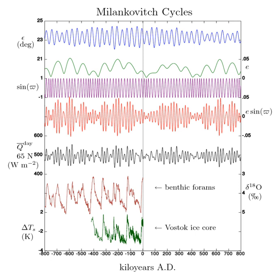Milankovitch emphasized the changes experienced at 65 degrees north due to the greater amount of land at that latitude. Land masses change temperature more quickly than oceans, because of the mixing of surface and deep water and the fact that soil has a lower volumetric heat capacity than water.